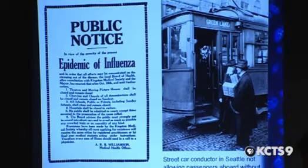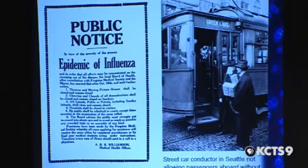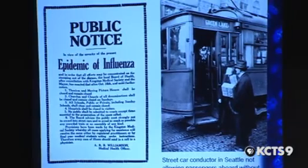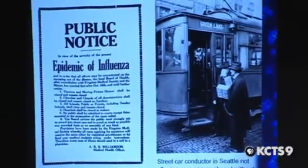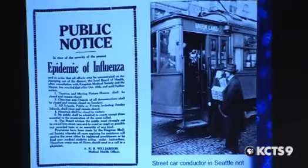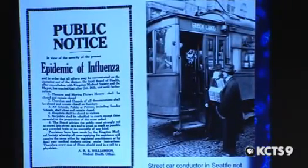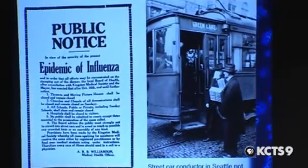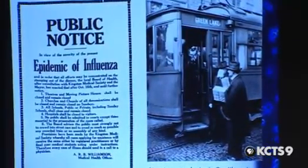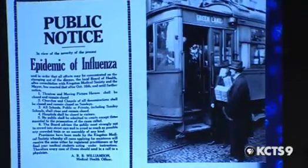This is actually a picture from Seattle — they had a trolley up in Green Lake in those days — of people wearing masks during the 1918 pandemic. And you can read some of the things here which sound somewhat familiar today: closed schools, closed public buildings, and this sort of thing.